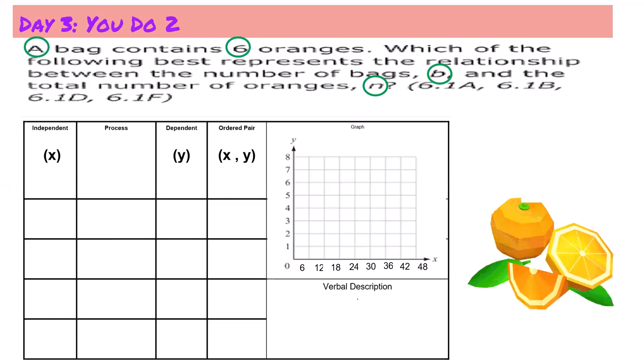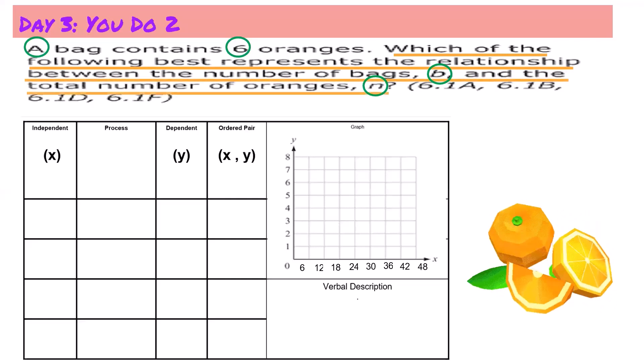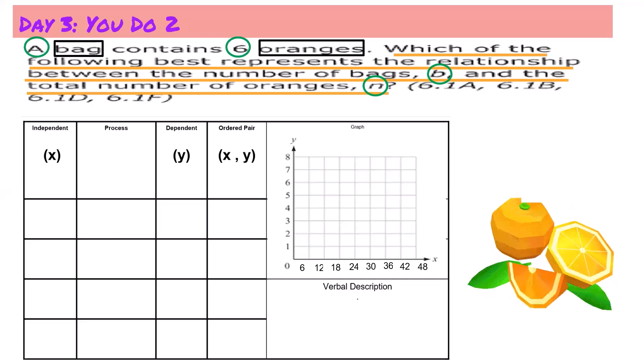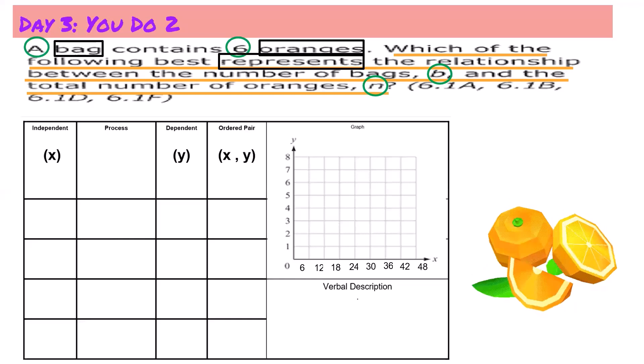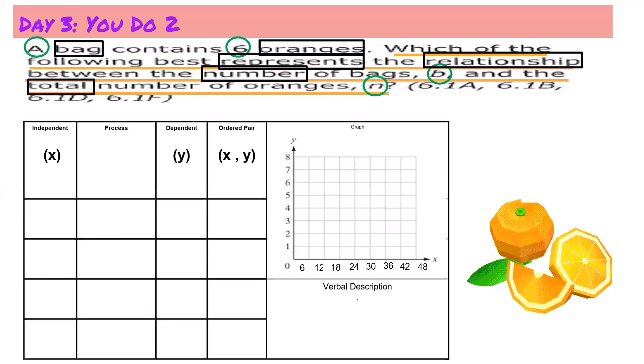And b is a variable which represents the number of bags, and n is a variable which represents the total number of oranges. Now let's underline the question: which of the following best represents the relationship between the number of bags b and the total number of oranges? Now let's box in keywords. Keywords I would box in: represent, bag, and oranges. This lets me know that one bag will contain six oranges. Also, represent the relationship. I know that out of my answer choices I am looking for the one that best represents the relationship between the number of bags and the total number of oranges.